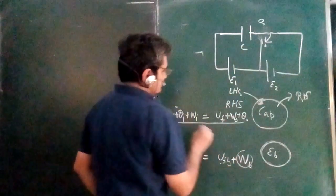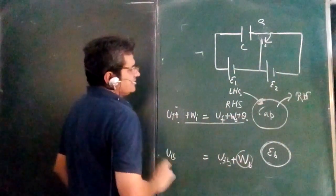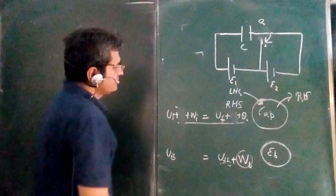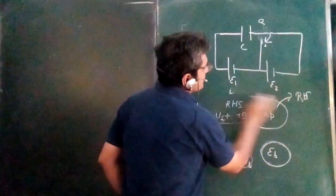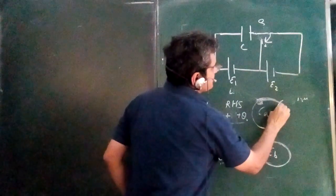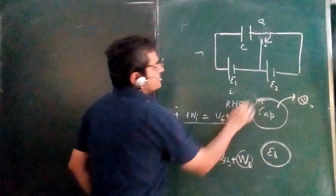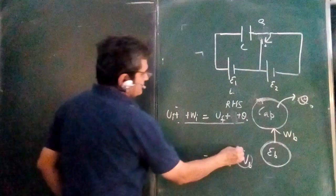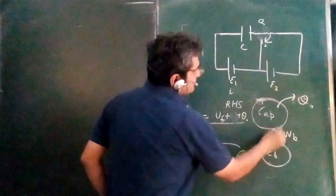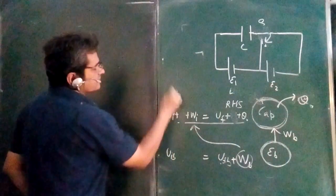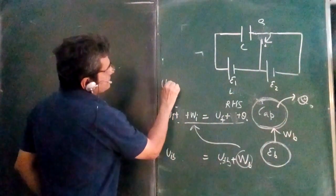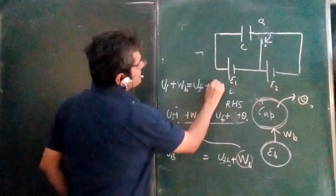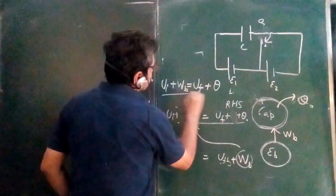For the capacitor, I am not heating it, so no heat is being given into the system. The capacitor may be giving heat out, but is not receiving heat. Work is being done on the capacitor, which is the work done by the battery. So the WB of the battery is basically going into the capacitor system.